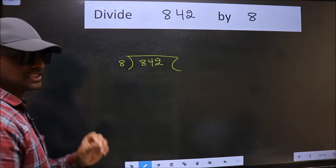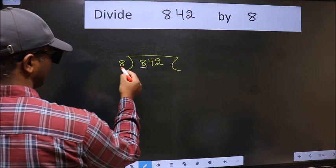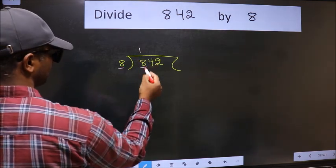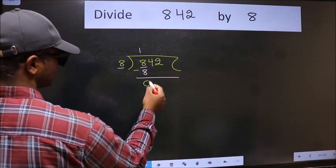This is your step 1. Next. Here we have 8 and 8 here. When do we get 8 in 8 table? 8 once 8. Now we should subtract. We get 0.